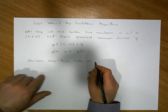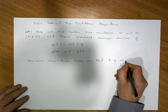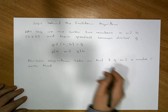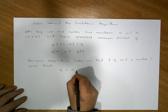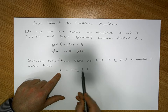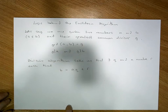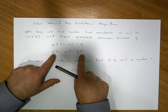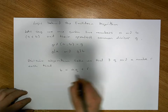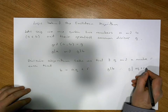In other words, given the larger number, the smaller number will divide into it q times with some remainder r — that's what the division algorithm tells us. Clearly, from our choice of g as the greatest common divisor between a and b, g divides b. Also, g divides a. So we have g divides b, and b is equal to aq + r, therefore g divides aq + r.